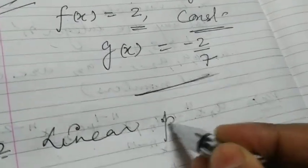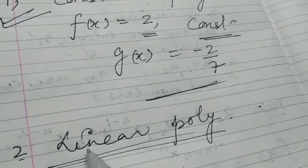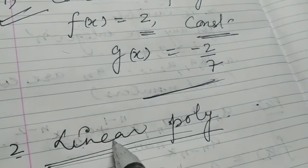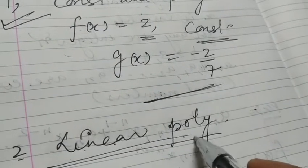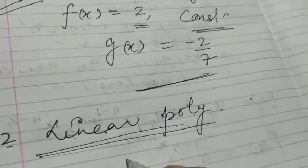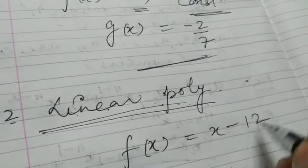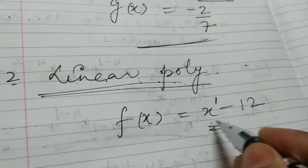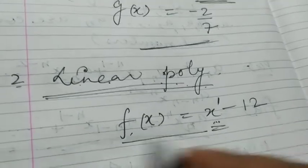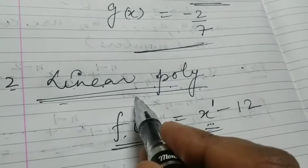The second type of polynomial is the linear polynomial. Whenever you talk about a line, that means the highest degree of the polynomial is equal to 1. For example, f(x) = x − 12, where the highest degree of x is 1. Hence this represents a linear polynomial.